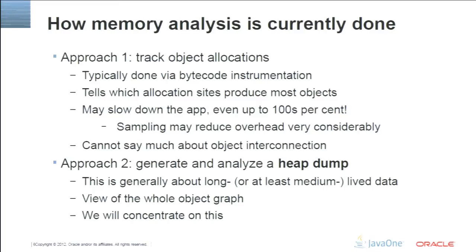Existing tools for memory analysis mainly concentrate on two approaches. Approach number one is to track object allocation — this tells us which allocation sites create most objects and gives us GC turnaround information. Unfortunately, once we know where an object is allocated, it's usually very difficult with this approach to figure out what happens to the object after that — which data structures it eventually gets attached to. Approach number two is about analyzing interconnections between objects and answering who retains these objects in memory, which is about long or medium-lived data.